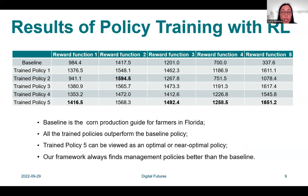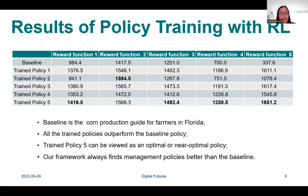To validate the proposed framework, we compare the results of all trained policies with that of a baseline policy following a corn production guide for farmers in Florida. The evaluation results of each trained policy with different reward function designs are listed in this table. Trained policy five achieves the largest cumulative reward, calculated with reward functions one, three, four, and five, which may be attributed to the stochasticity in the training process and the benefit of penalizing nitrate leaching through the reward in helping the reinforcement learning agent find an optimal or near-optimal policy. The results also show that our framework always finds management policies with higher reward than the baseline.